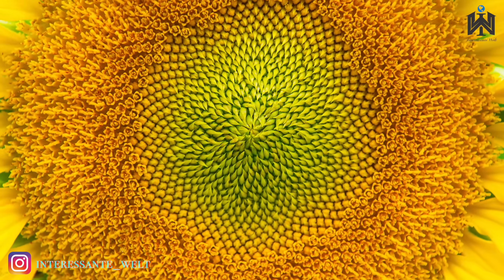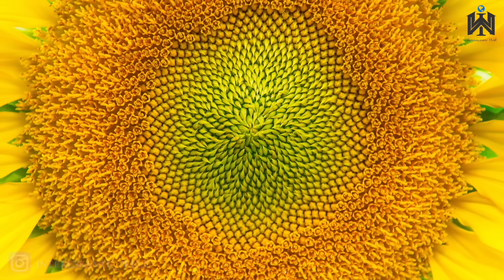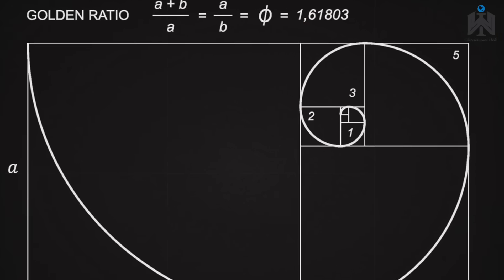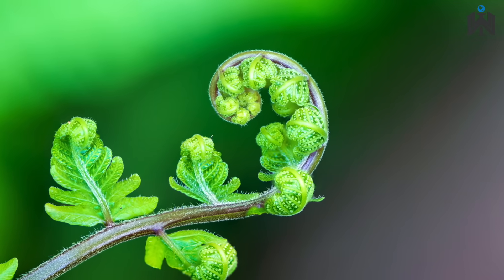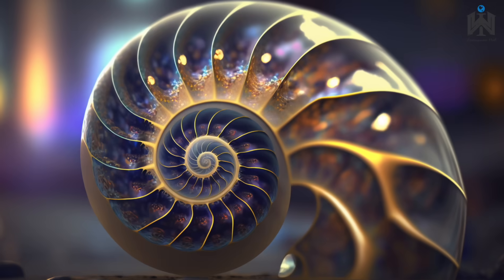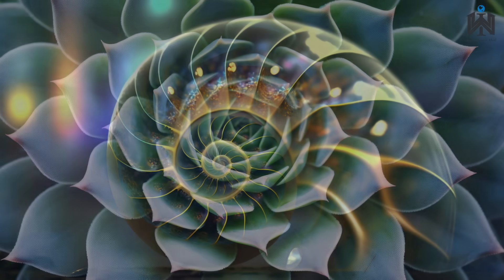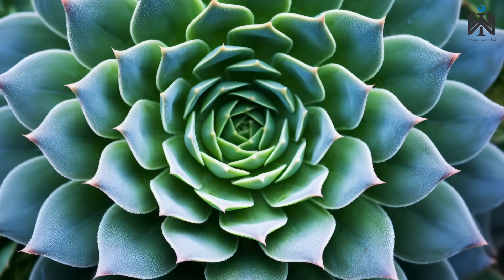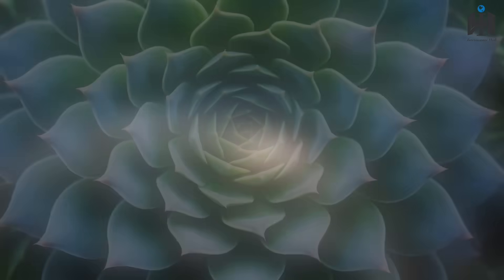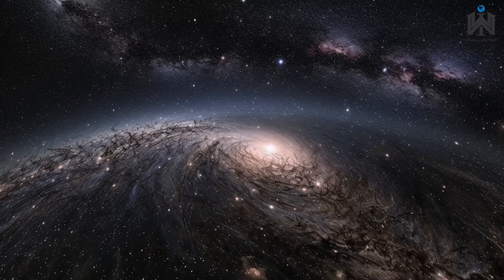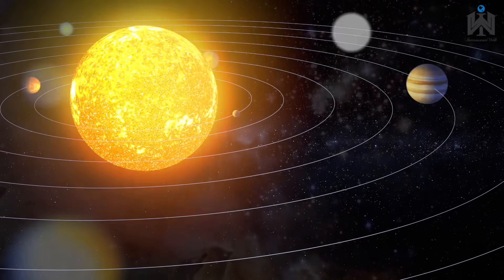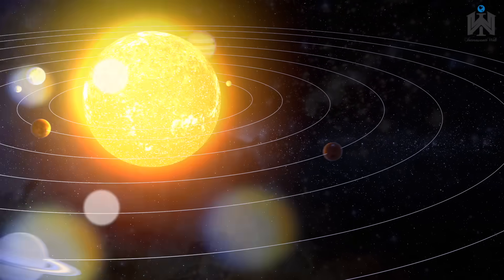Wir haben auf diesem Kanal immer wieder festgestellt, dass die Natur nicht nur funktionale Strukturen offenbart, sondern oft auch tiefgreifende Schönheit und Ästhetik. Dieses Zusammenspiel von Ordnung und Anmut zieht sich durch mikroskopische Welten ebenso wie durch die Weiten des Kosmos. Eine weitere faszinierende Idee, die diese Verbindung von Wissenschaft und Schönheit aufgreift, ist die Vorstellung der Sphärenharmonie.